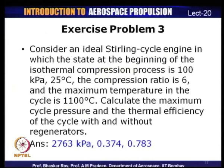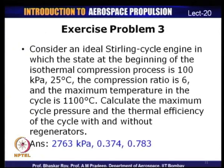Exercise 3 (Stirling cycle): In an ideal Stirling cycle, the state at the beginning of isothermal compression is 100 kPa and 25°C, compression ratio is 6, and maximum temperature is 1100°C. Calculate maximum cycle pressure and thermal efficiency with and without a regenerator. Answers: maximum pressure = 2763 kPa; efficiency without regeneration = 0.374; efficiency with regeneration = 0.783.